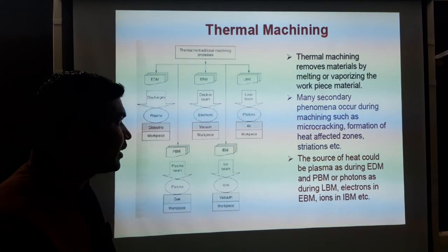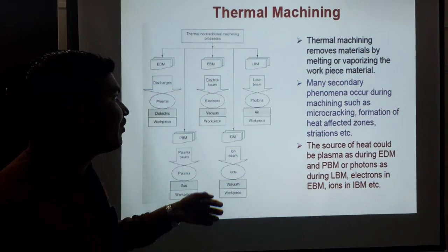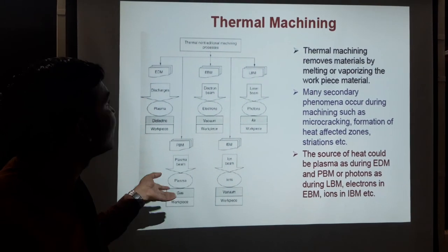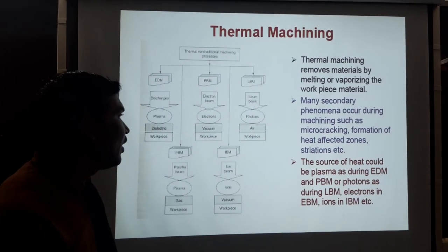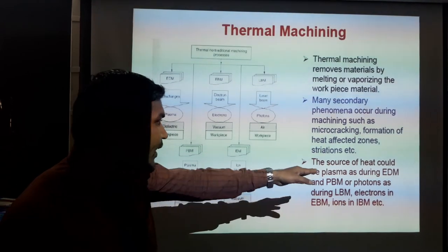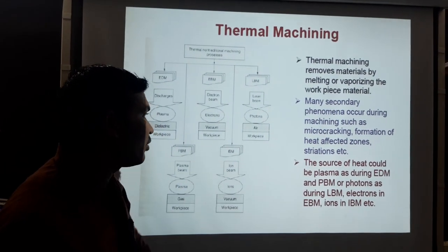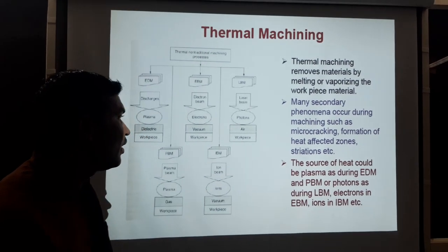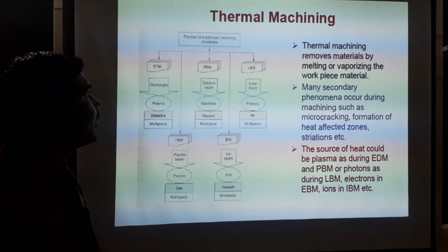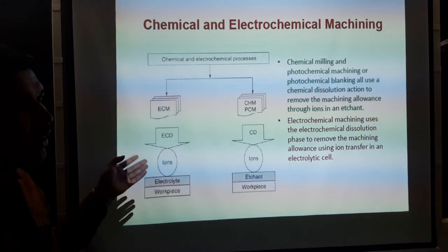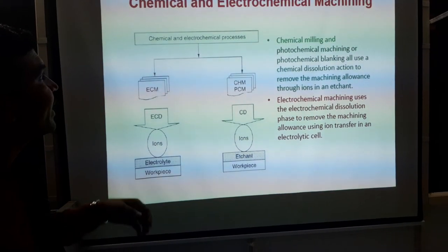Problems encountered in thermal processing include micro-cracking, formation of heat affected zone, and other issues. Sources of heat such as plasma during electrical discharge machining, plasma beam machining, and proton during laser beam and electron beam machining are discussed. These are all related to thermal processing. Then coming to chemical and electrochemical processes.